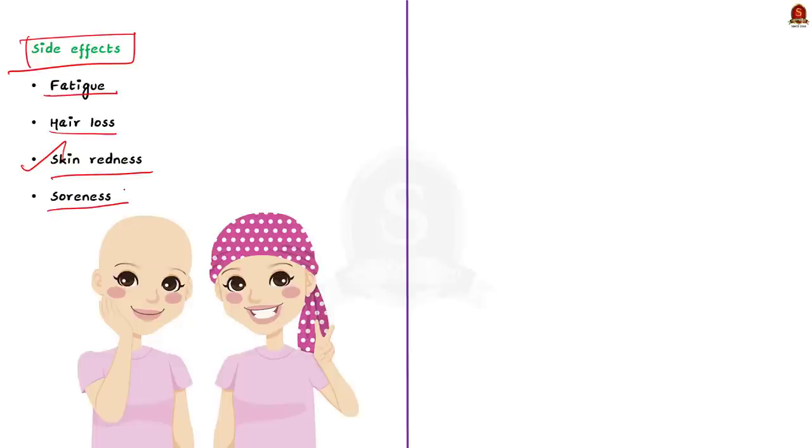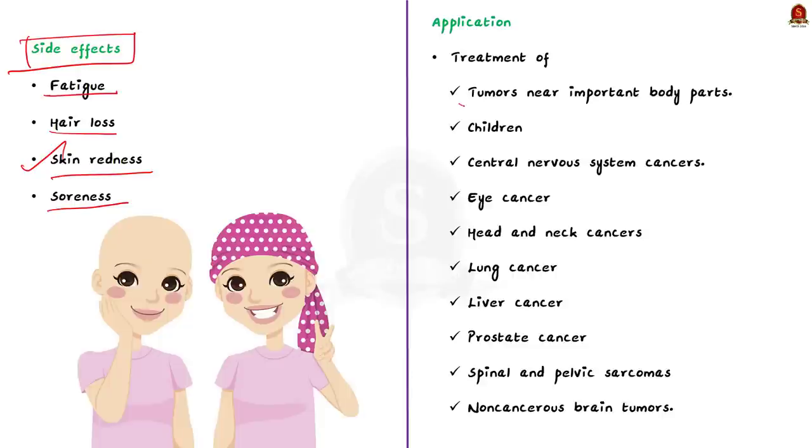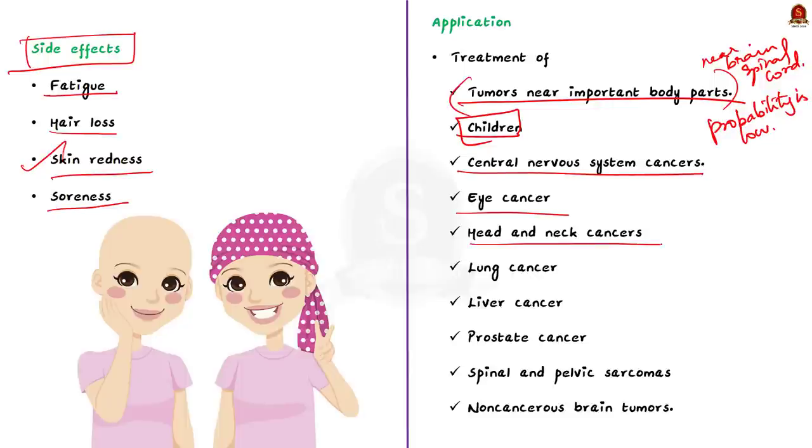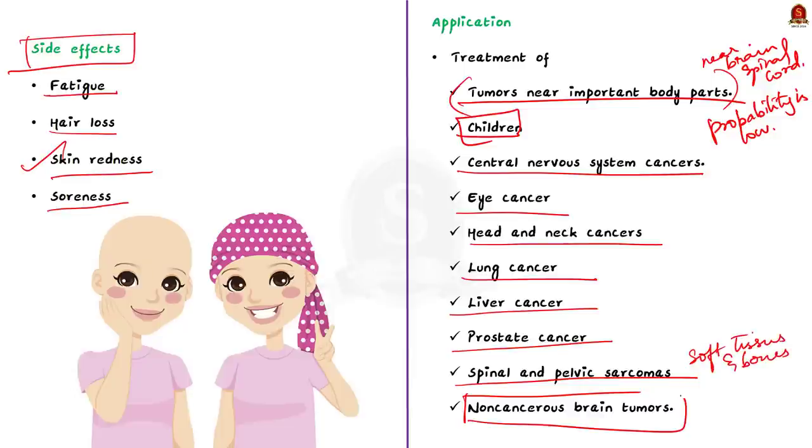Now coming to the final part that is the application of proton therapy. Proton therapy is useful for treating tumors that are near the important parts of the body. For example cancers near the brain and spinal cord. As proton therapy can treat the cancer by targeted delivery of radiation the probability of the healthy part getting affected is very low. Know that it is also used for treating children because it lessens the chance of harming healthy growing tissues. Apart from this it may also be used to treat central nervous system cancer, eye cancer, head and neck cancer, lung cancer, liver cancer, prostate cancer, spinal and pelvic sarcomas which are cancers that occur in the soft tissues and bones and non cancerous brain tumors.